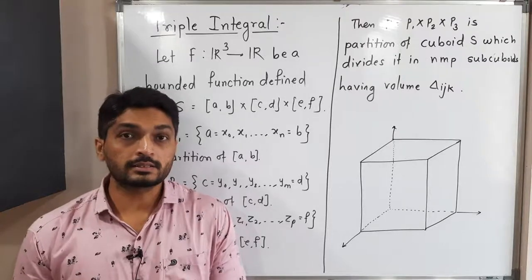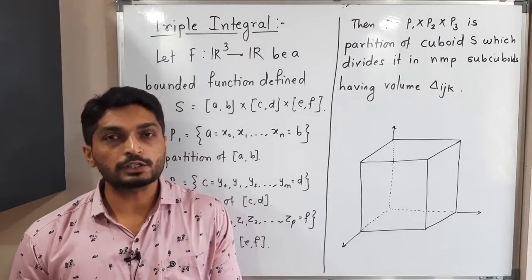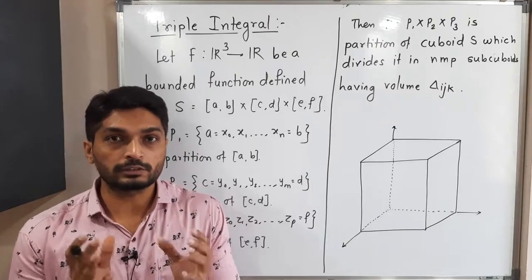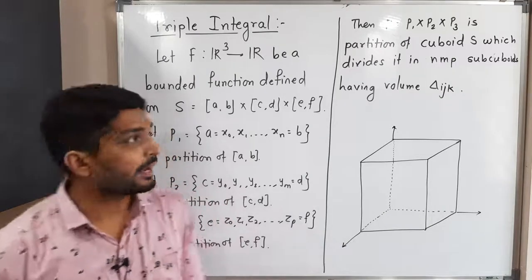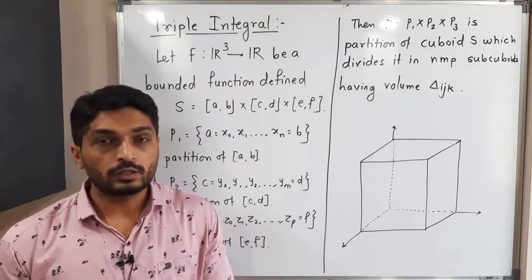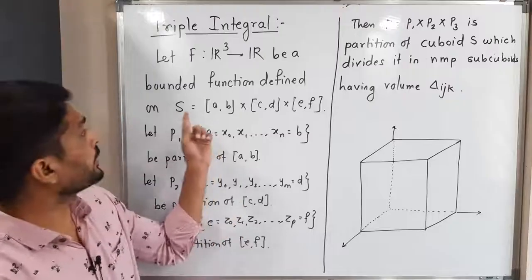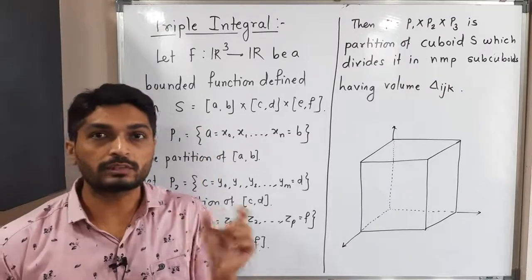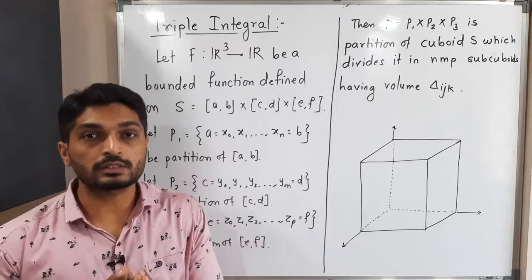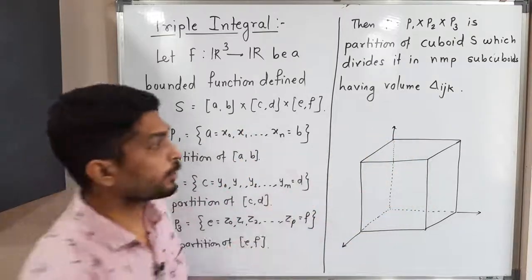Let us discuss the theory part of triple integration. When we say a function is integrable on a cuboid — a three-dimensional figure — we have a function f defined from R³ to R, bounded on a cuboid S, which is a product of three intervals: [a,b] cross [c,d] cross [e,f].